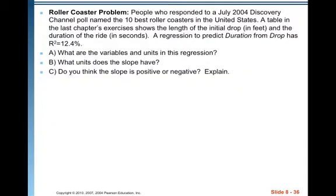So we're going to look at the rollercoaster problem. People who responded to a July 2004 Discovery Channel poll named the 10 best rollercoasters in the United States. A table shows the length of the initial drop in feet and the duration of the ride in seconds. A regression to predict duration from drop has R-squared equals 12.4%. What are the variables and units of this regression? What units does the slope have? Do you think that the slope is positive or negative? Explain.